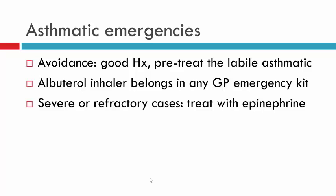For asthmatic emergencies, with a good history, pre-treating the labile asthmatic with an inhaler should be largely avoidable. Albuterol belongs in any general practice emergency kit, and there is no reason the labile patient can't be pre-treated. For severe or refractory asthmatic attack not responding to albuterol, epinephrine becomes the drug of choice.